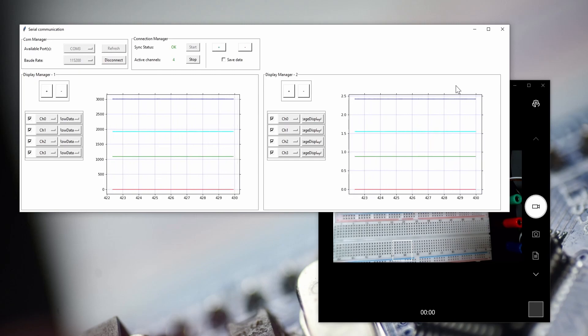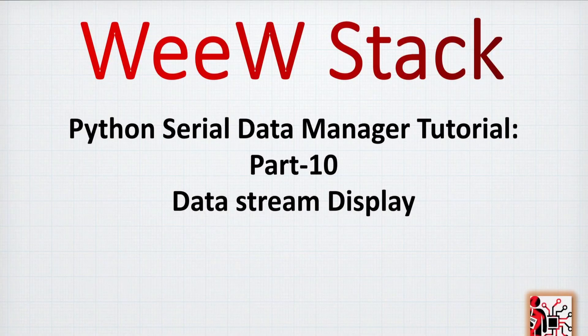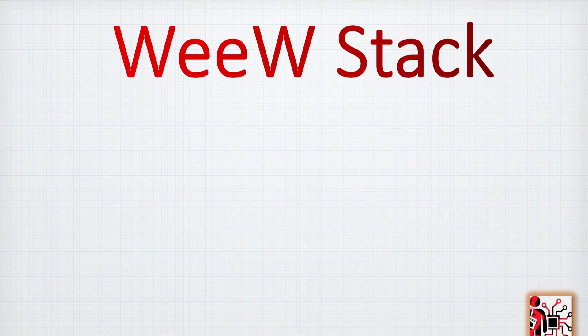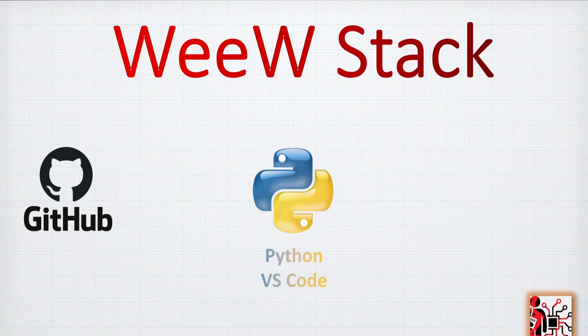If you would like to see how we complete this, just follow this video and stay tuned. This video will be focusing on the data stream display. Within the whole tutorial, this is video number 10 and the last one of part 2, which will display the data stream. By the end of this video, you will be able to visualize your data and properly use your user interface. As usual, the code is available on GitHub — you can download the file and follow along with this video.